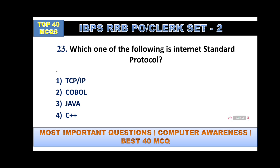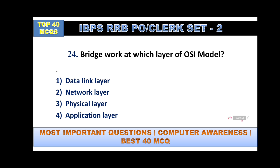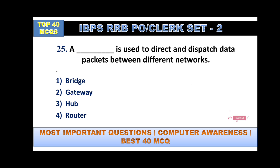A bridge works at which layer of the OSI model? In computer networking there are two models: OSI model and TCP model. In the OSI model there are seven layers. A bridge works at the Data Link layer — option number one. A switch works at the network layer.